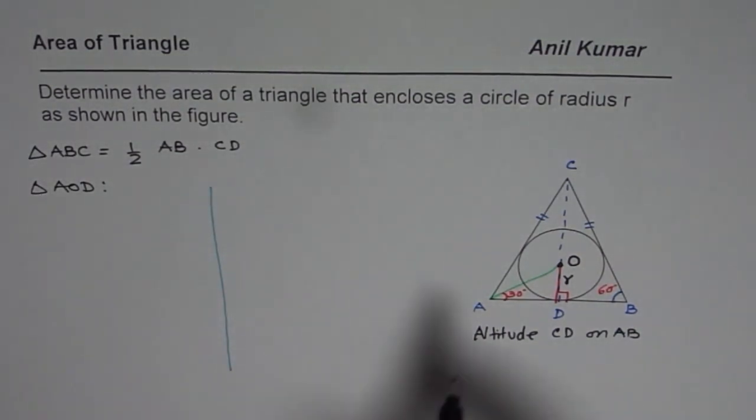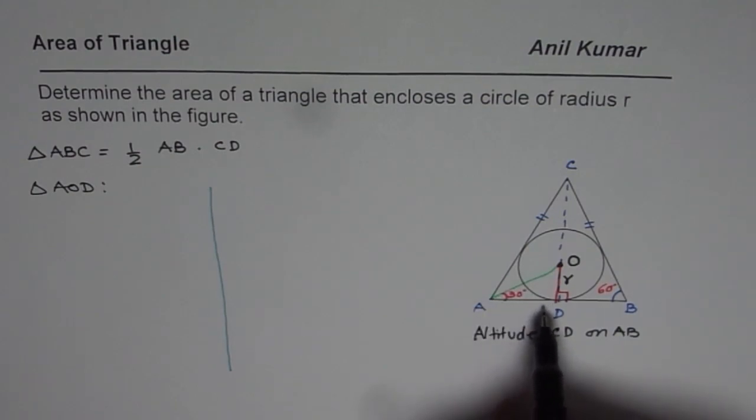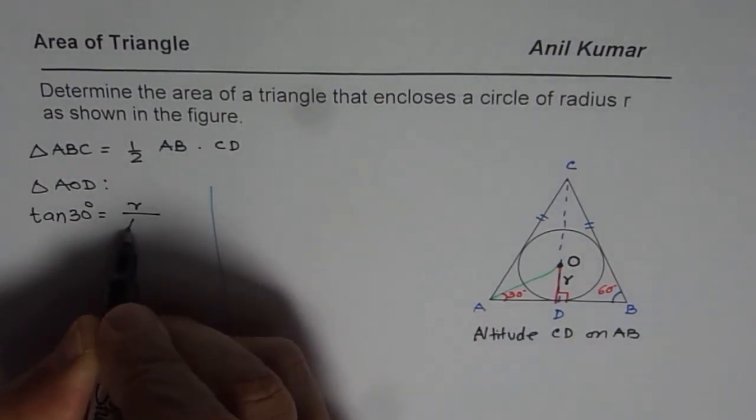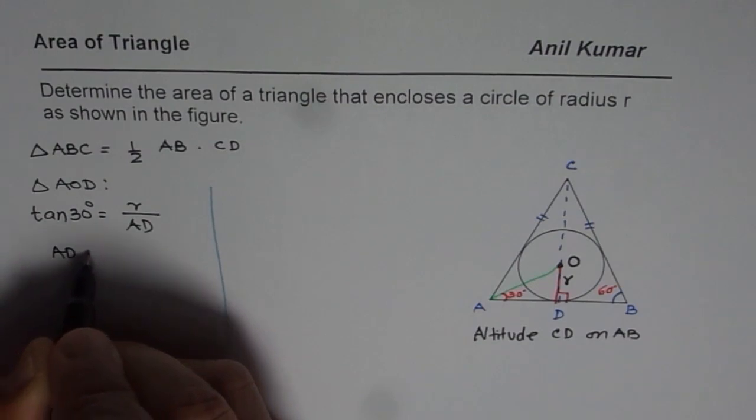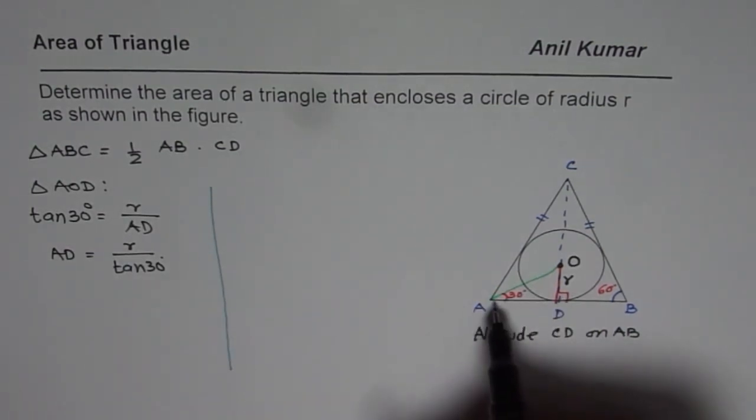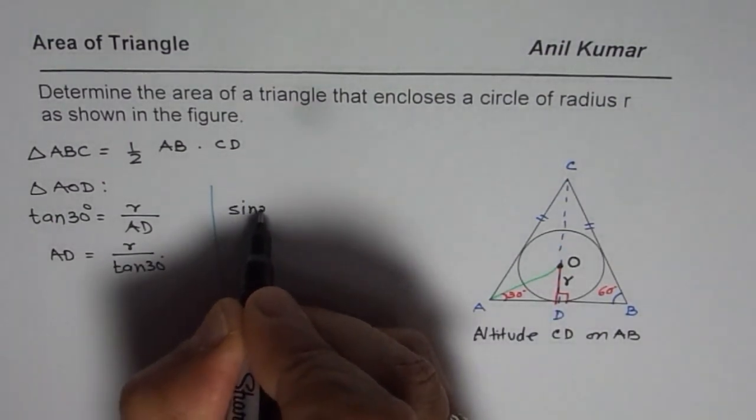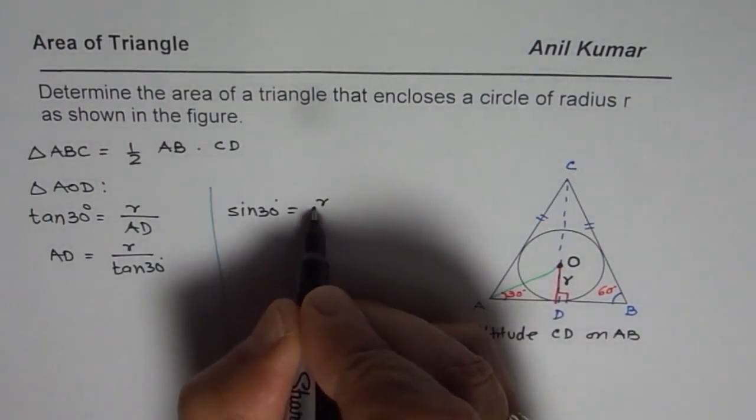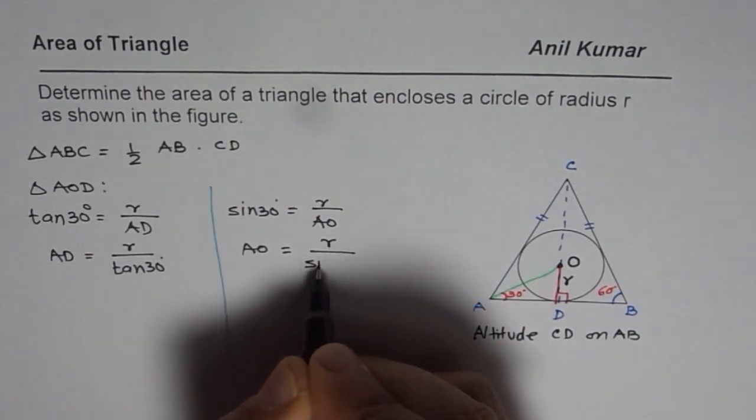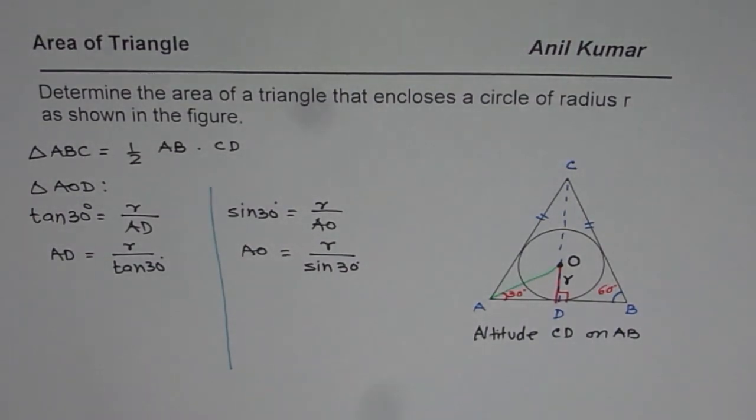Now in this particular triangle let us find AD and AO. How do we find AD? To find AD we can use tan ratio since we know opposite and adjacent sides. So we can say tan of 30 degrees is equal to opposite side R divided by AD. So AD is equal to R divided by tan of 30 degrees. Now to find AO that is the hypotenuse we need to use sine. So we will say sine of 30 degrees is equal to R over AO. So AO is equal to R divided by sine of 30 degrees.